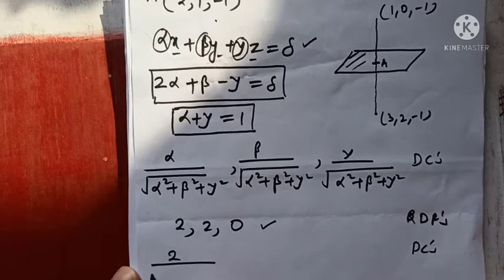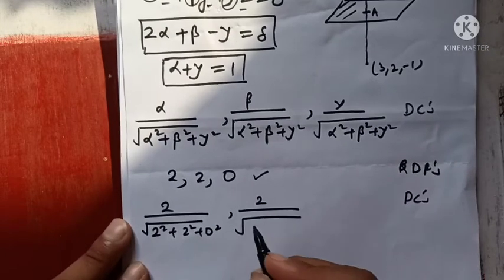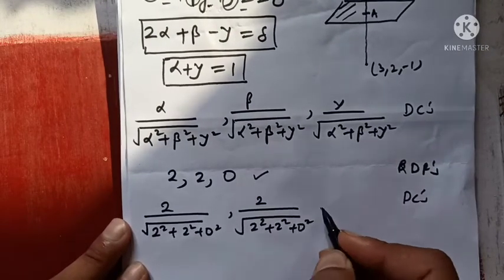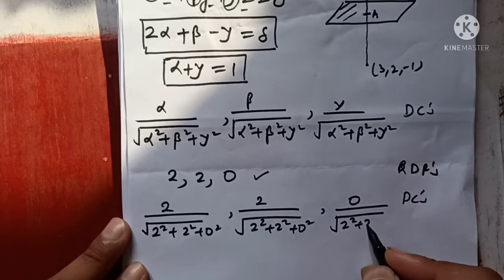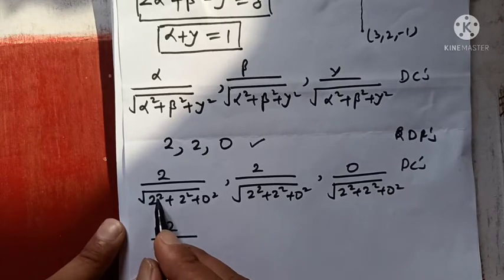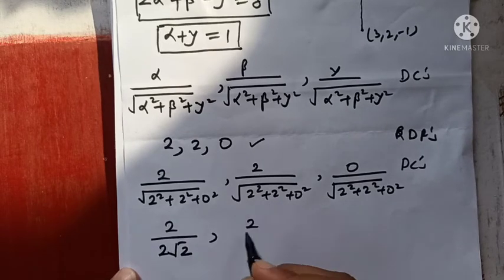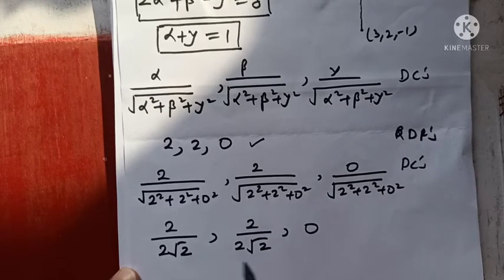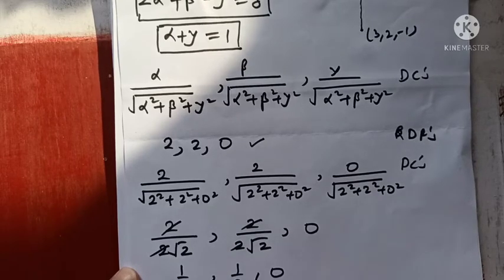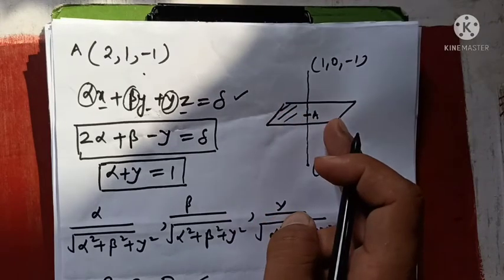The direction cosines from the normal are: 2/sqrt(2²+2²+0²), 2/sqrt(2²+2²+0²), and 0/sqrt(2²+2²+0²). Simplifying: 2²+2² = 4+4 = 8, and sqrt(8) = 2√2. So 2/(2√2) = 1/√2, the second component is also 1/√2, and the third is 0. So direction cosines from the normal are (1/√2, 1/√2, 0).